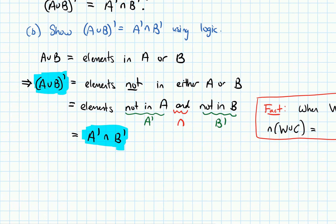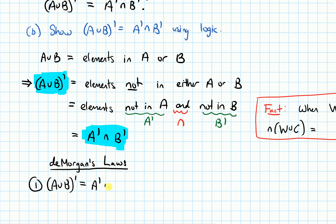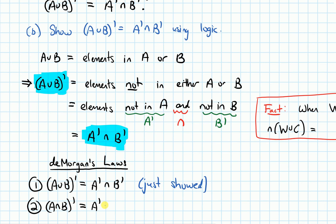This set identity is so important that it has a name in set theory — it's one of DeMorgan's Laws. There are two identities in DeMorgan's Laws. The first is the one we just showed: A union B complement equals A complement intersected with B complement. The second is A intersect B complement equals A complement union B complement — it just flips the intersections and the unions. This second one is saved for homework as an exercise.